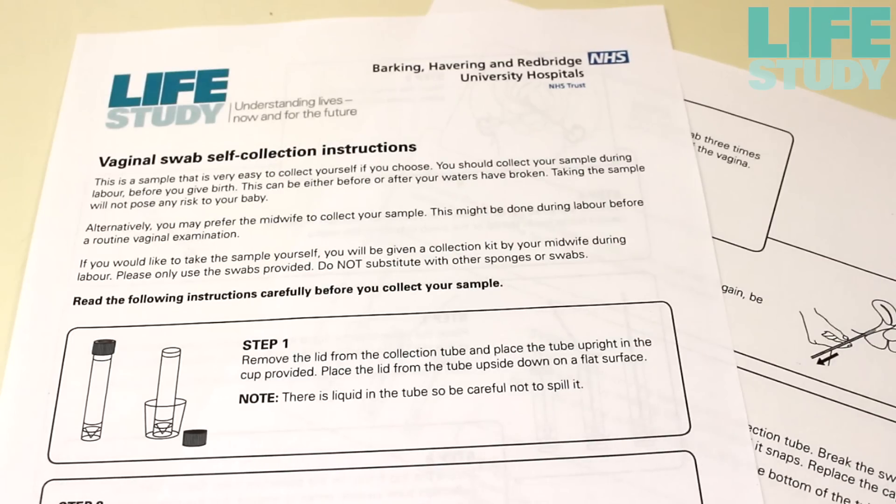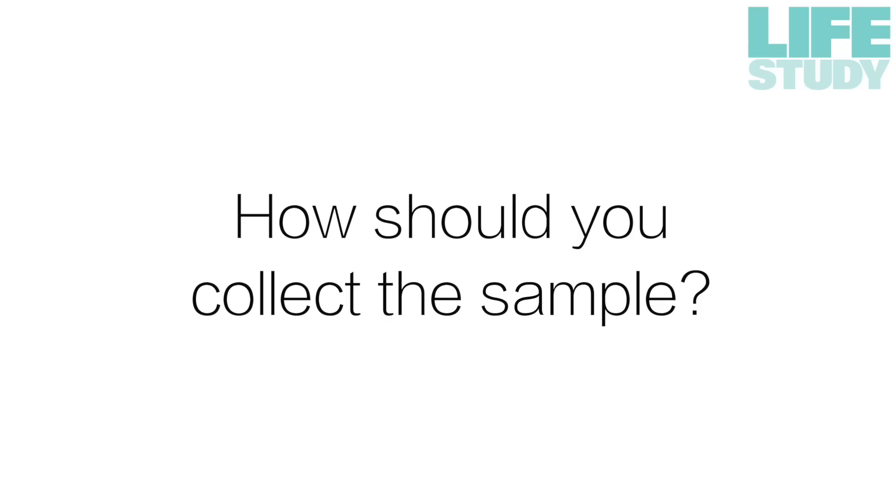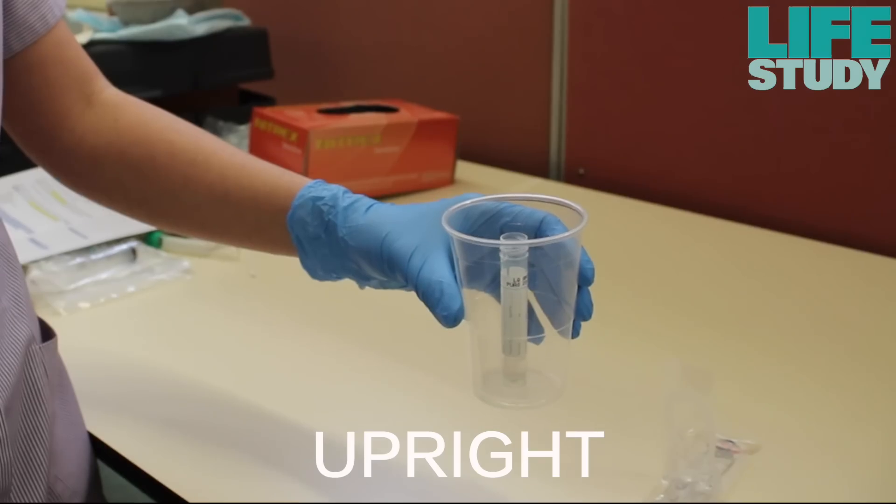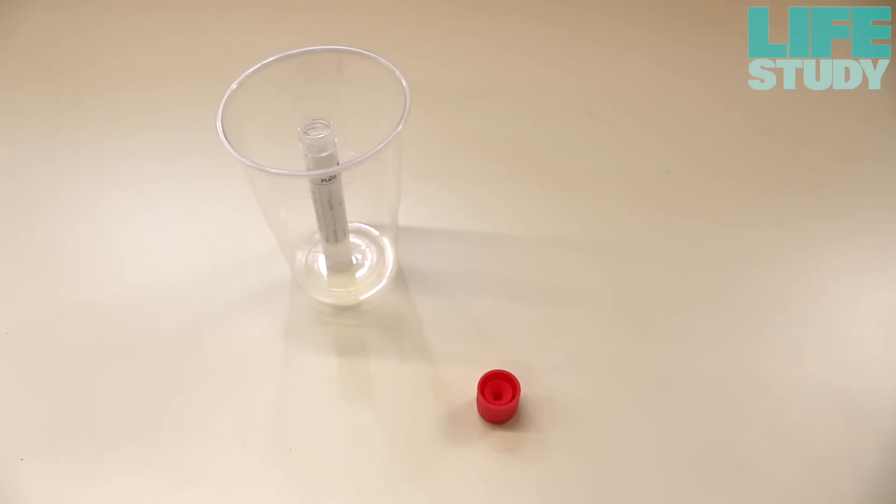For women collecting their own sample, how to collect the sample is explained in the information leaflet in the pack. Remove the lid from the collection tube and place the tube upright in the cup provided. Place the cap upside down on a flat surface.